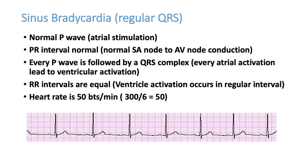To identify sinus rhythm on ECG, you need a P wave, then a proper PR interval, every P wave followed by a QRS complex, and the RR interval should be regular. To calculate heart rate, count the large squares between two RR intervals: 300 divided by the number of squares gives the rate. If 5 squares, that's 60; if 6 squares, that's 50. If more than 6 squares, heart rate is less than 50 — that is sinus bradycardia.